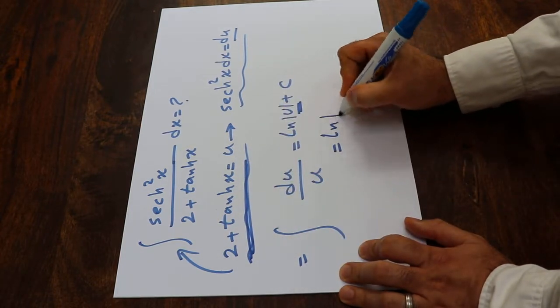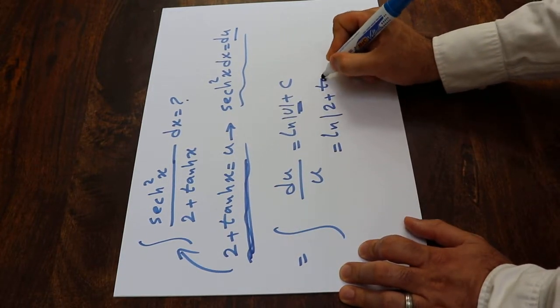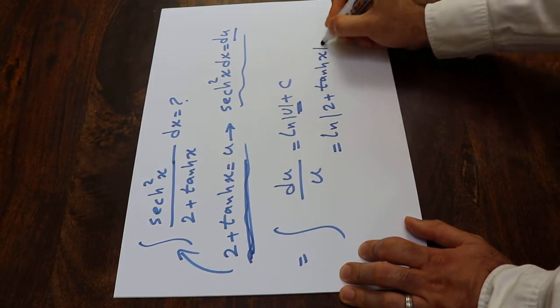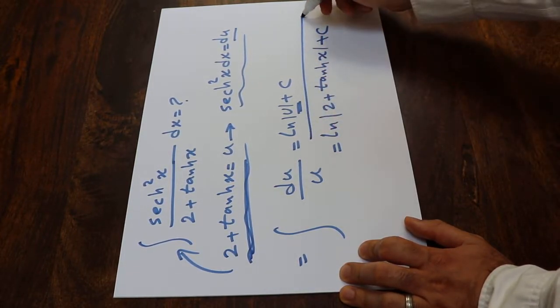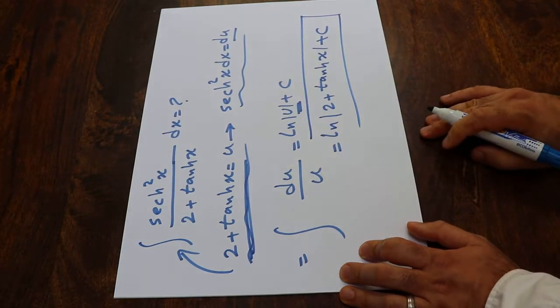So that will be ln of 2 plus hyperbolic tangent x plus c, which is the constant of the integral. And that's the solution to the integral.